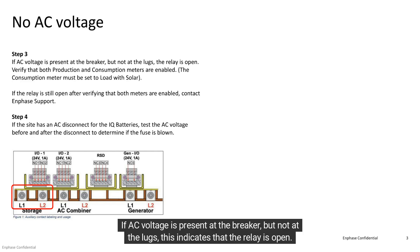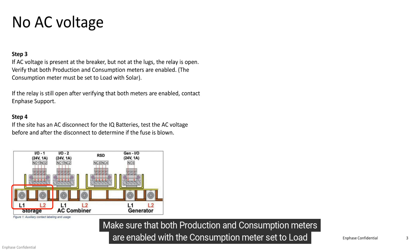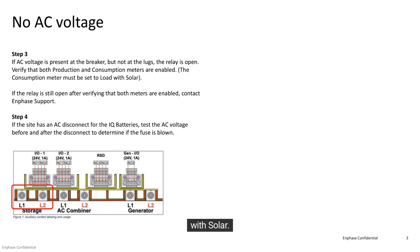If AC voltage is present at the breaker, but not at the lugs, this indicates that the relay is open. Make sure that both production and consumption meters are enabled with the consumption meter set to load with solar.